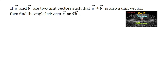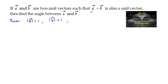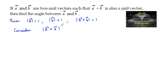If a and b are two unit vectors such that a plus b is also a unit vector, find the angle between a and b. Given a and b are unit vectors, mod a is equal to 1, mod b is equal to 1, and also a plus b, the resultant of the two vectors a and b, is also a unit vector — that is, mod of a plus b is equal to 1.